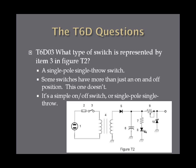What type of switch is represented by item three in Figure T2? If you look at item three, it is a single pole, single throw switch. There are many different types of switches — some have more than just an on and off position, and some can go in multiple directions. But this one simply turns something on or off. So it's a single pole, single throw switch.